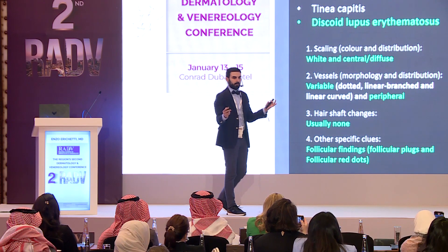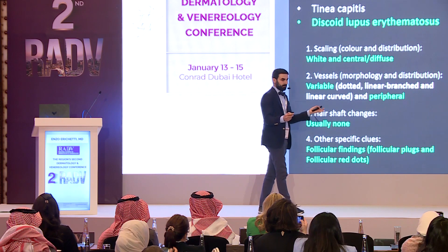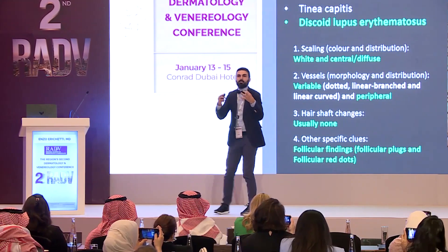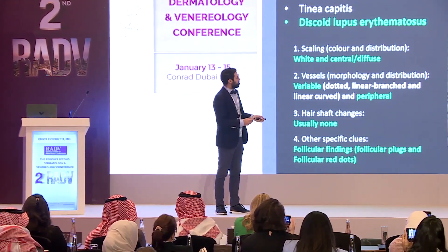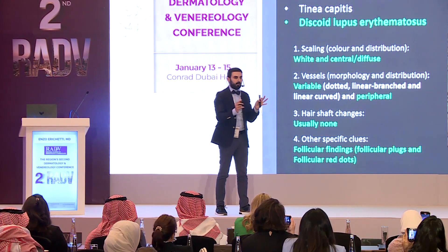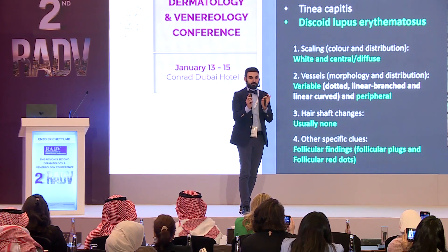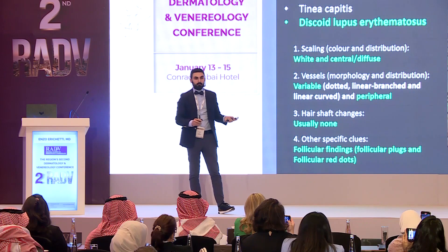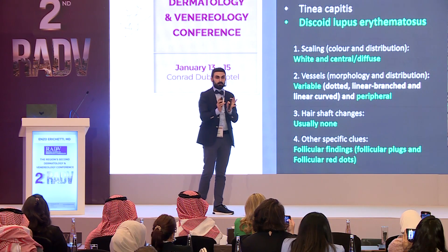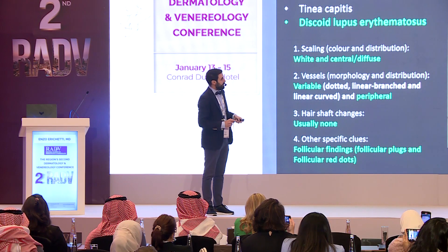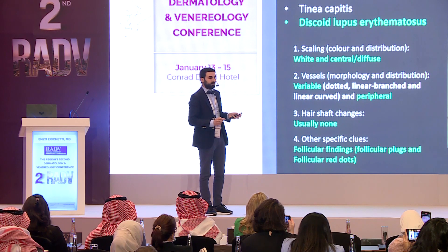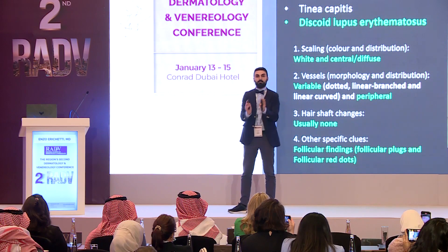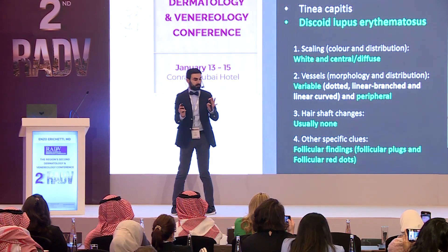Discoid lupus: this is, of course, scarring, but in early stages it does not show scarring. The main findings are follicular features — mainly follicular plugs due to follicular hyperkeratosis. We also see red follicular dots, but this is not so common. The main clue is the presence of follicular plugs. We also have scaling and white bright areas due to fibrosis.